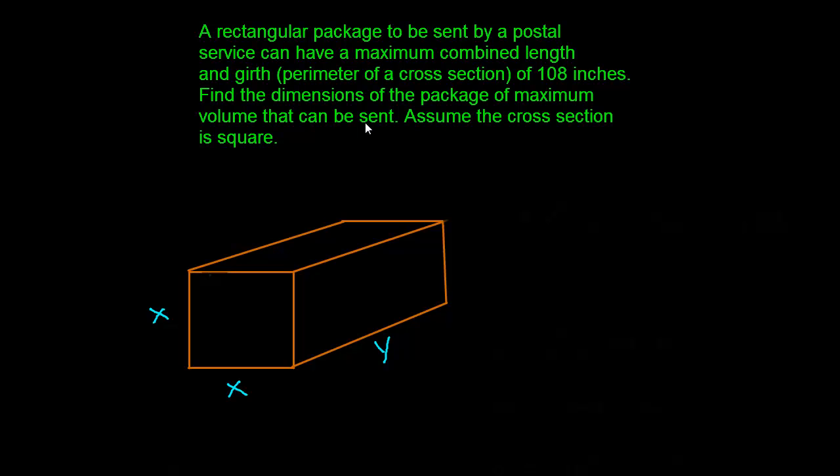In this video we're going to look at an optimization problem. We're going to mail a package via the U.S. Postal Service, but they stipulate that the girth of this package, the perimeter around this box, plus the length of the box can be no more than 108 inches. With that stipulation, what are the dimensions that maximize the volume? We want to fit the most amount of stuff in there as possible.